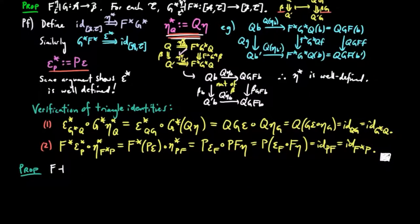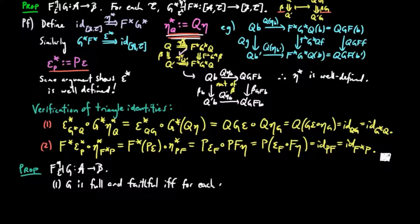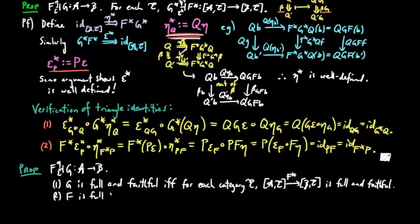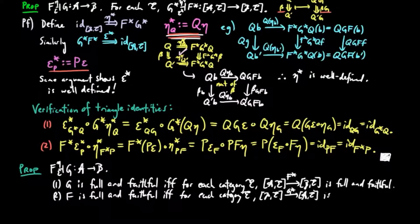Now we can prove that given an adjoint situation F⊣G from A to B, we have: (1) G is full and faithful if and only if for each category E, F* is full and faithful; and (2) F is full and faithful if and only if for each category E, G* is full and faithful.